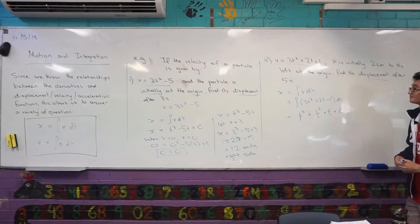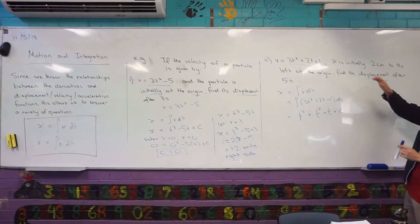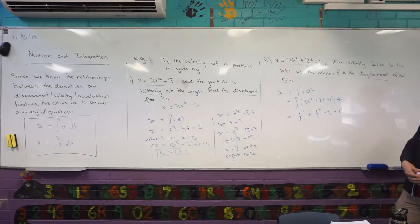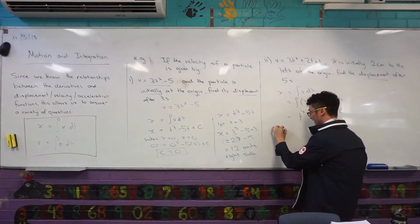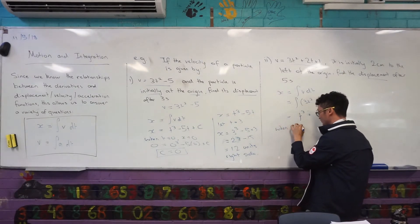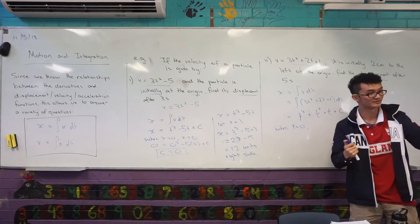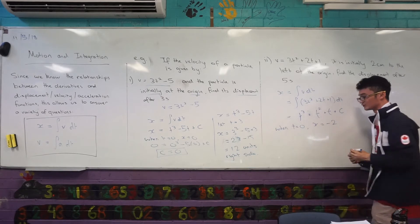Okay. And it doesn't matter how complex this is starting to look. We can always use the information we're given. So I know it's initially, so anytime I'm thinking initially, I'm thinking t equals 0. 2cm to the left of the origin. So, yeah, good. When t is equal to 0, right, you're thinking if it's to the left of the origin, I've got a negative displacement. Exactly right. Your x value will be negative 2 this time.